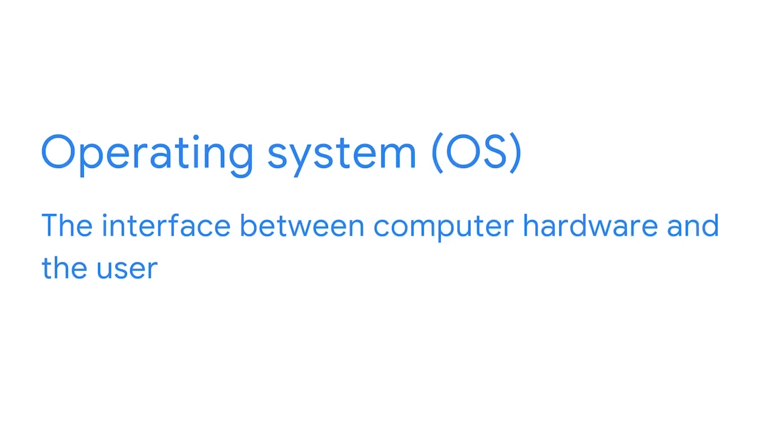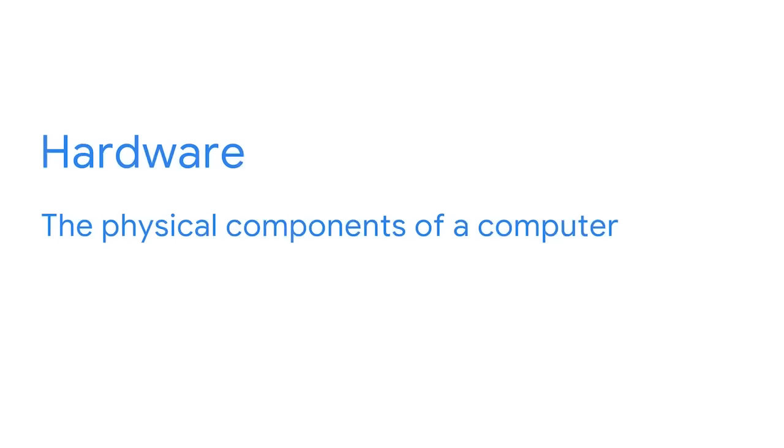Devices like computers, smartphones, and tablets all have operating systems. If you've used a desktop or laptop computer, you may have used the Windows or Mac OS operating systems. Smartphones and tablets run on mobile operating systems like Android and iOS. Another popular operating system is Linux, which is used in the security industry. So what exactly is an operating system? It's the interface between the computer hardware and the user. The OS is responsible for making the computer run as efficiently as possible while also making it easy to use. Hardware refers to the physical components of a computer.